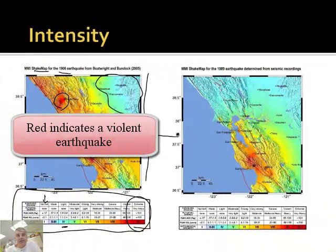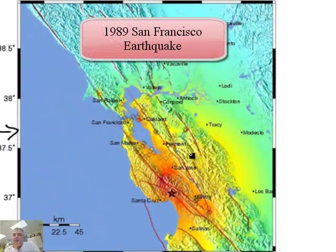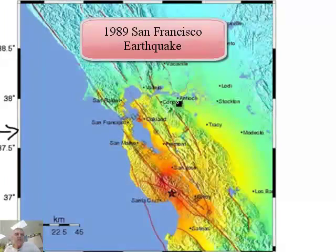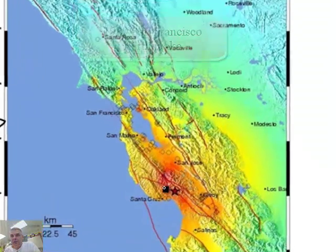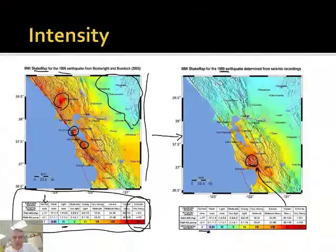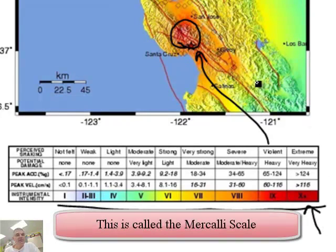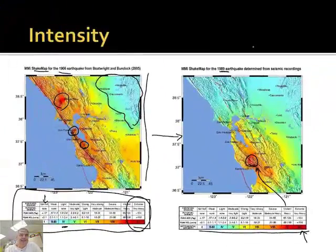Conversely, moving to the second graph — this is the 1989 earthquake of San Francisco. You can see the same kind of intensity situation, but the most important part was near Santa Cruz, which they would say is a violent intensity. You can determine the intensity of an earthquake by how close you are. There's a Roman numeral scale that measures intensity, going from Roman numeral 1 upward, where 10-plus is very extreme.